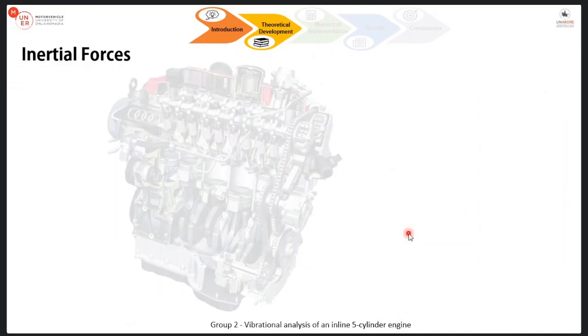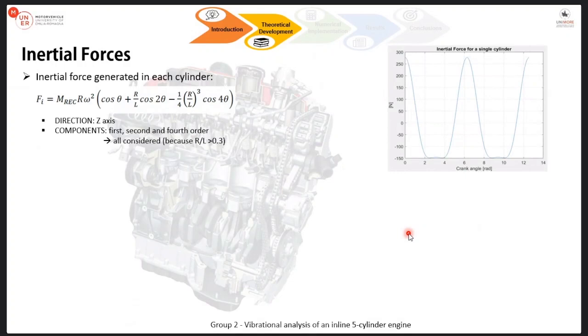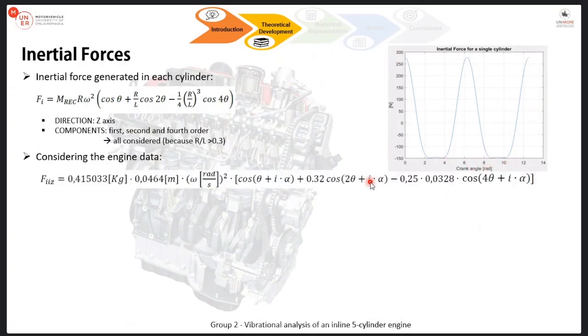The second thing we were asked to do was to identify the forces acting on the engine. To do that we used this formula here that has three terms, the first one a first order component, a second order component, and a fourth order component. It is very important to note that all the forces act in the z direction, so there are vertical forces with respect to the place located. We couldn't neglect the fourth order component because the ratio between R and L was higher than 0.3. The form of these forces can be seen here in this graph. We put the numbers, the precise number inside the formula and we calculate the exact values.